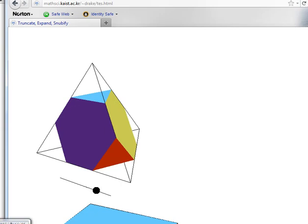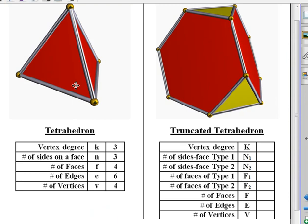Now I have some questions for you. Here we have the original tetrahedron. Each vertex has a degree 3 which means three edges meet at the point and three faces meet at each vertex.